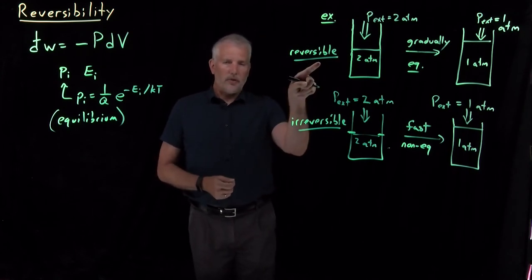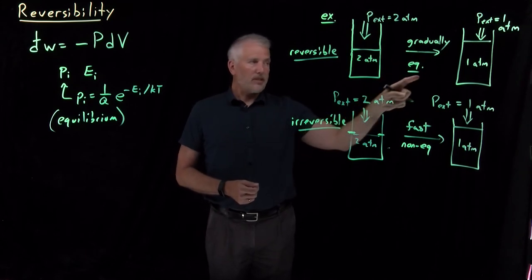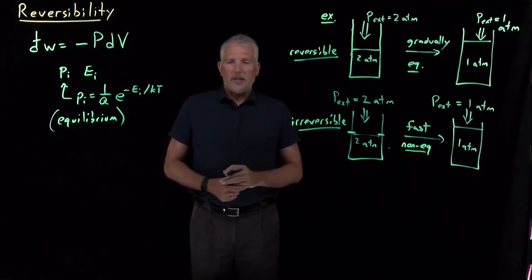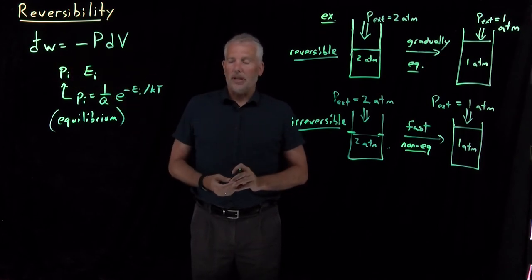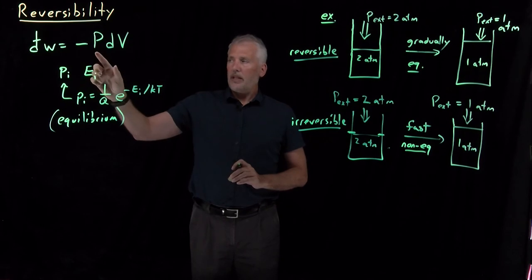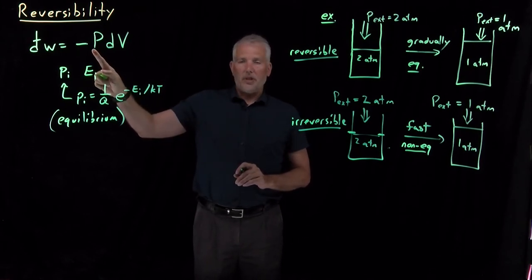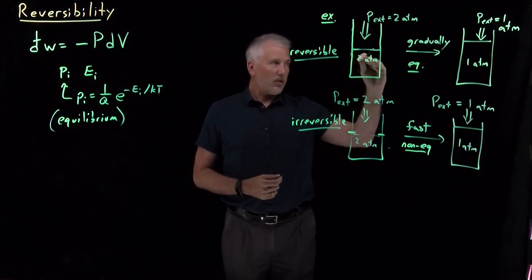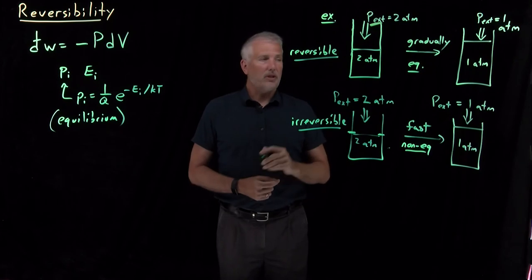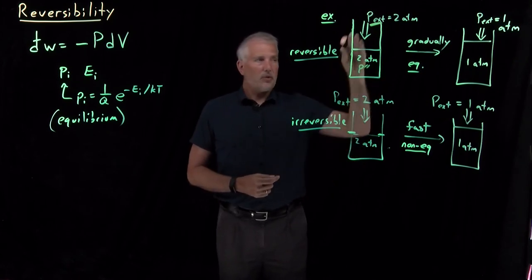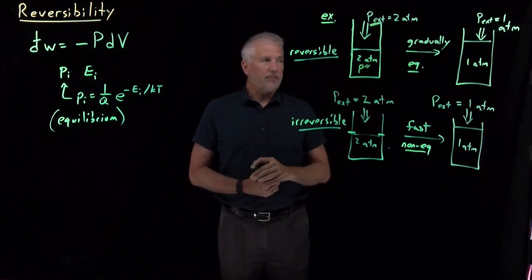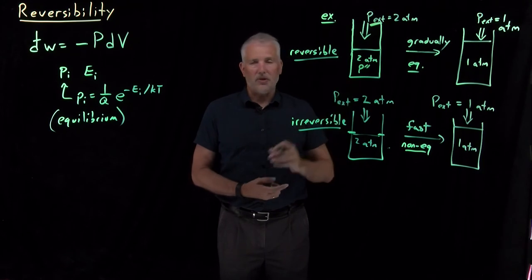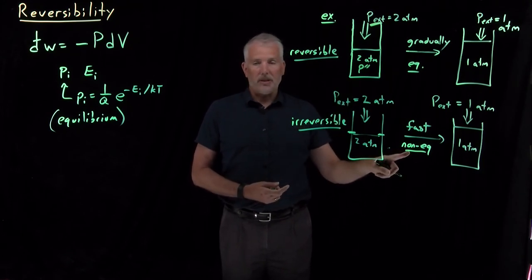That's the difference between a reversible process and an irreversible process — equivalently, a process that remains in equilibrium versus a non-equilibrium process. What does this have to do with PV work? The pressure in this equation was assumed for an equilibrium process obeying the Boltzmann distribution. During the whole expansion, it doesn't matter whether we use the external or internal pressure, because those two quantities remain equal throughout. Halfway through, when external pressure has dropped to one and a half atmospheres, the internal pressure has also dropped to one and a half. For the non-equilibrium process, those two quantities are not the same.